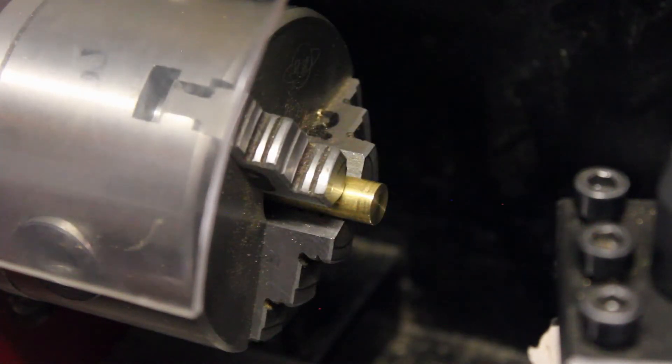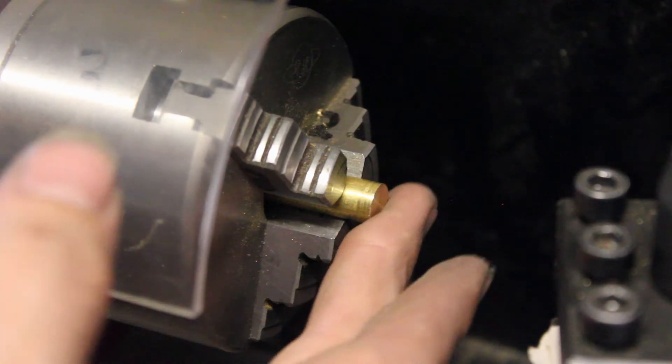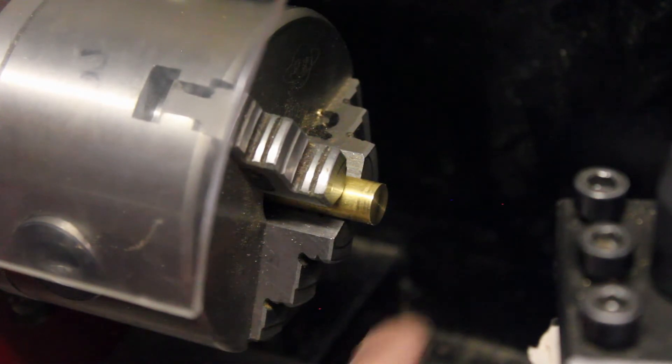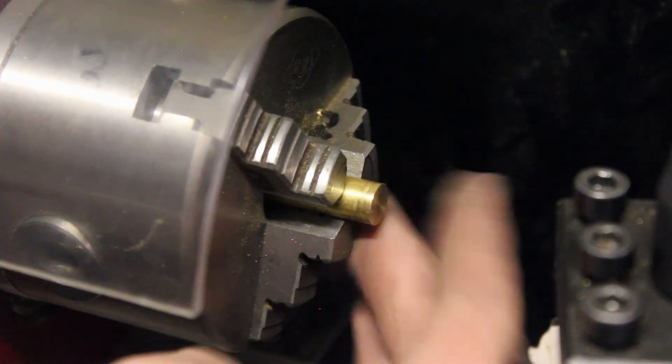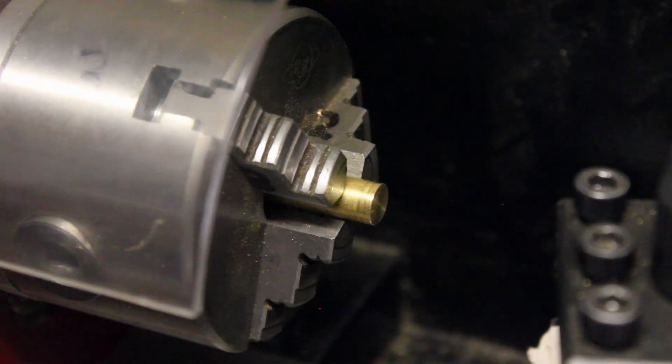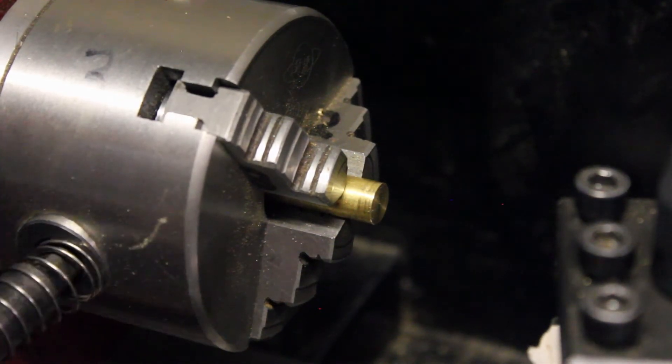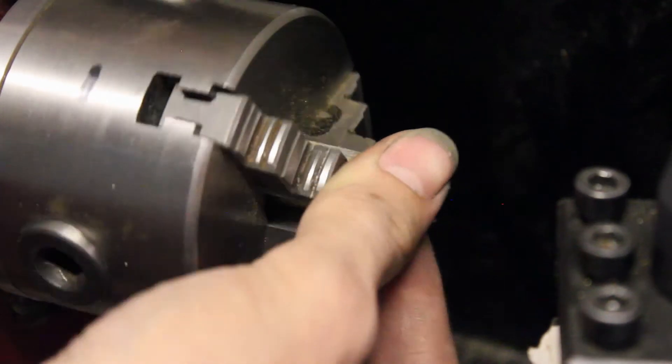With brass it's not as big of a problem, but if you do it with steel you can get really sharp burrs that will cut you if you don't take care of them. But now it's faced and deburred. Deburring is something you'll have to do after almost every single operation, not just facing.